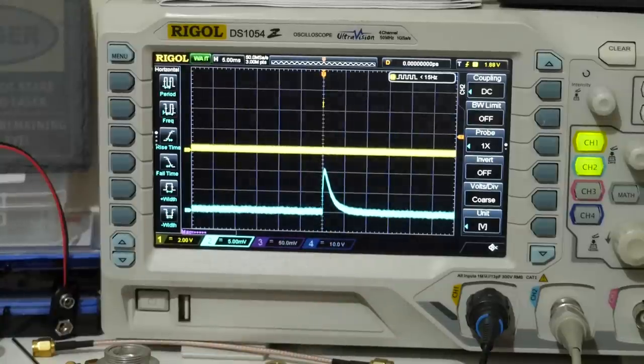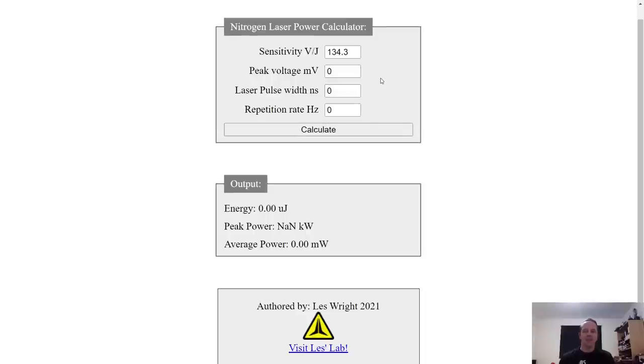Now that the values have been recorded from the sensors we can do a little bit of maths on them, or we can use a handy calculator like this one. This is a calculator I came up with a couple of years ago to compute nitrogen laser output powers but pulse lasers are pulse lasers so we can just go ahead and fill in our values. We read 12 millivolts peak from the pyroelectric sensor and we had a pulse width of approximately 5 nanoseconds and our repetition rate here was 30 kilohertz, so we'll hit calculate.